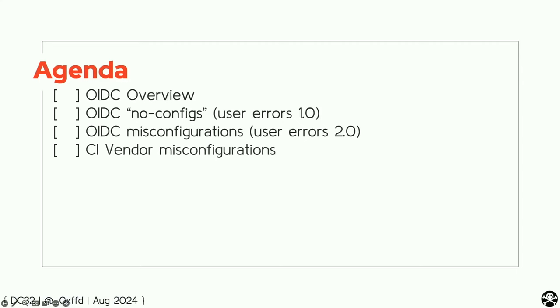Let's go into the agenda. We're going to start with an OIDC overview — for those of you familiar with this topic, hold on tight for a sec. After this, we're going to move into 'no configs' — a weird term I set up, I'll explain about it soon enough. We're going to move into advanced configurations and misconfiguration, and we're going to learn what happens when the CI vendor makes a misconfig and why we care about the CI vendor in that context.